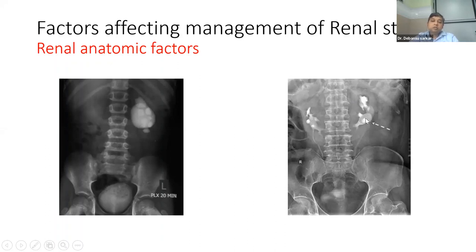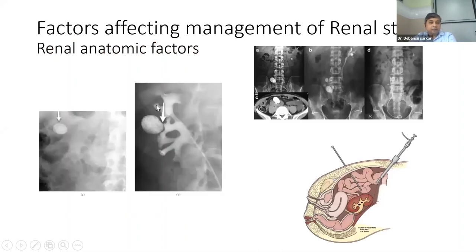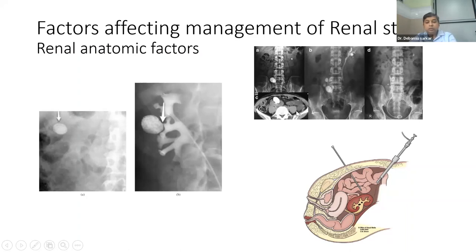For caliceal diverticular stone, you have no option but PCNL — do not subject this patient for ESWL even for smaller stones. For pelvic kidney, normal PCNL is very difficult — you need to do laparoscopic-assisted PCNL: you remove the overlying colon under laparoscopic vision and do the puncture under vision. So all these anatomical abnormalities need to be kept in mind. Clinical factors include symptom severity, associated infection, and solitary kidney. In a solitary kidney, there is no role for MET — the patient may present with anuria and acute renal failure. Solitary kidney — no MET, no conservative treatment, you must intervene.